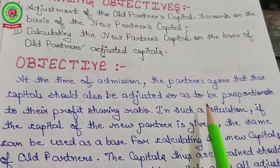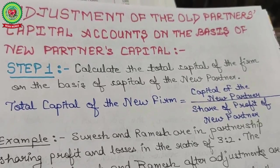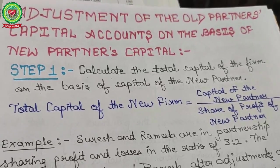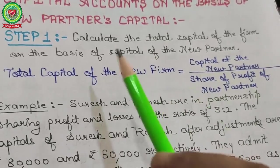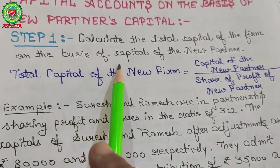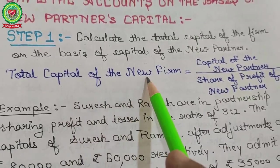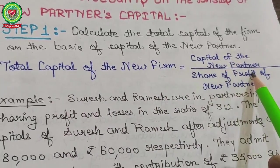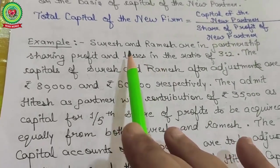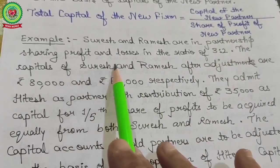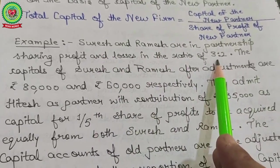When finding the old partners' capital on the basis of the new partner, the first step is to calculate the total capital of the firm. The formula is: total capital of new firm = capital of new partner divided by share of profit of new partner. For example: Suresh and Ramesh are in partnership sharing profits and losses in the ratio 3:2.